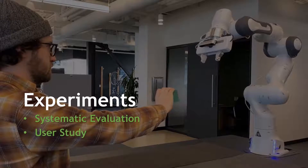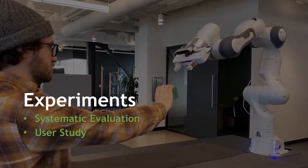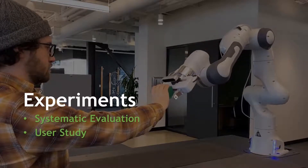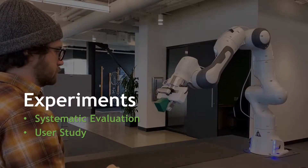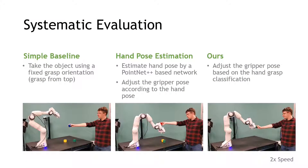We performed two types of experiments to validate our combined approach — both our task plan and our classification system. First, we conducted a systematic evaluation, and second, a user study. In the systematic evaluation, we compared three different versions of our system for human-to-robot handover. Each uses the same perception to track the human via the Microsoft Azure camera mounted beside the robot's table, and the same task model and planners.